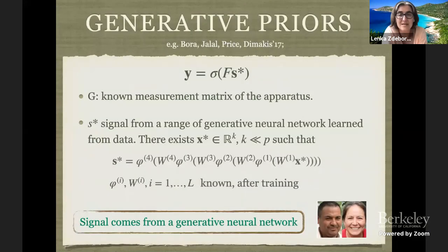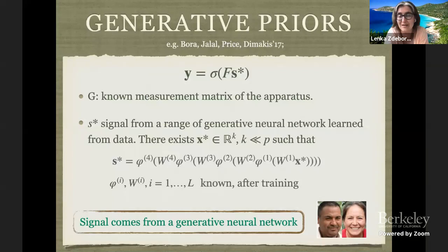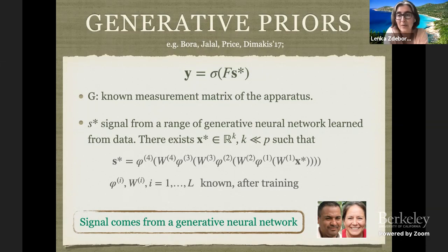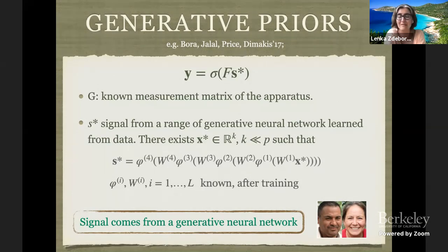Imagine the community that say 10 years ago was studying compressed sensing and was very interested in signals that can be represented in a sparse basis. A large part of this community is these days excited about taking inspiration from deep generative models that generate pictures of people that look very realistic — they are able to capture amazing structure. Given enough data, you can train such a model, meaning your signal x* can be represented in the form that corresponds to a generator of a GAN or decoder of an autoencoder.